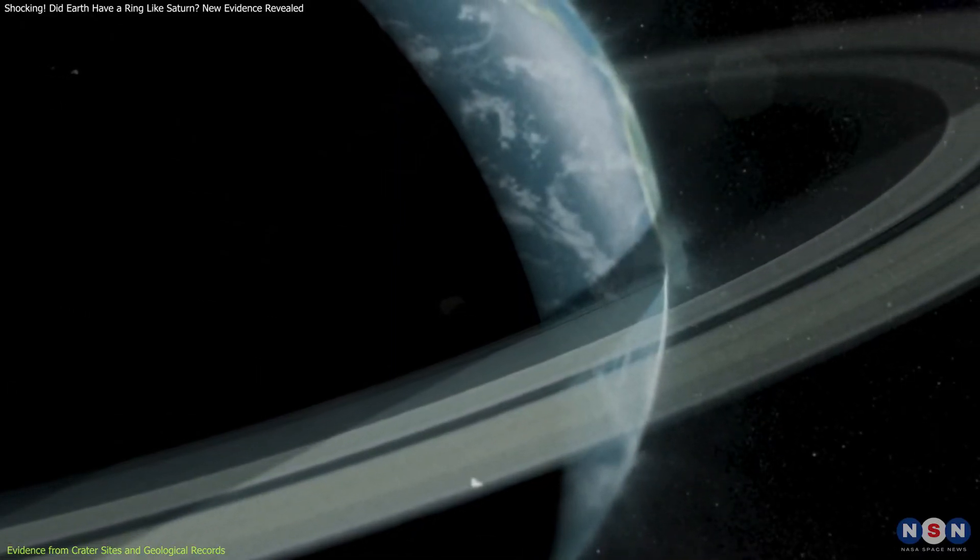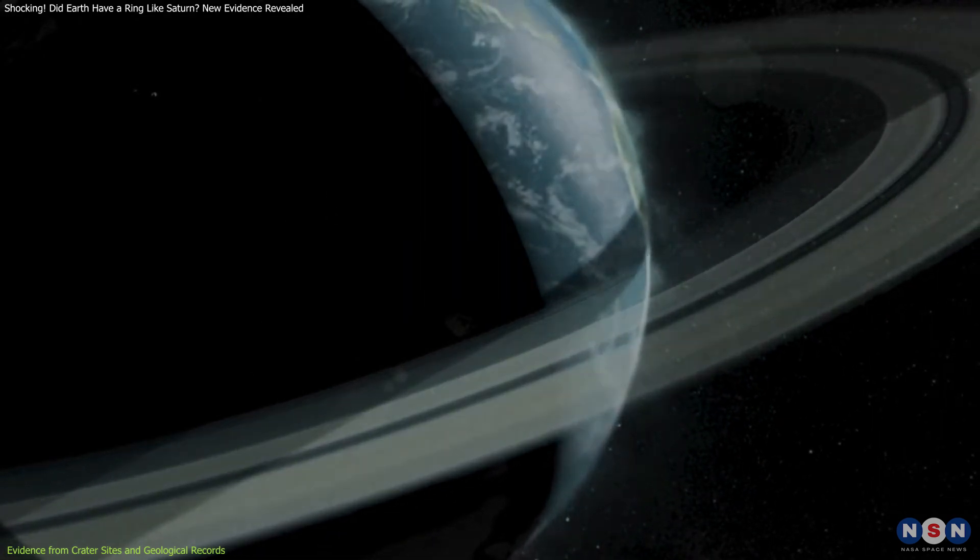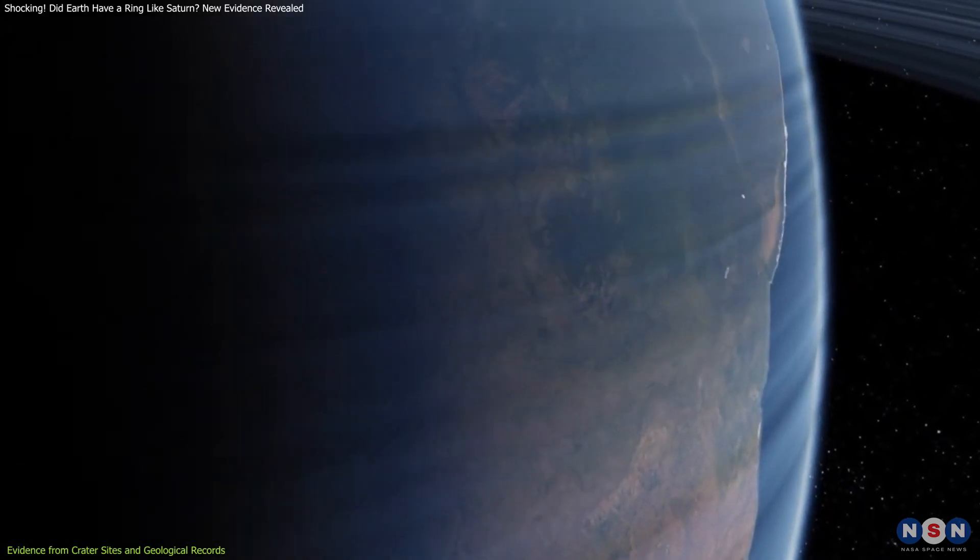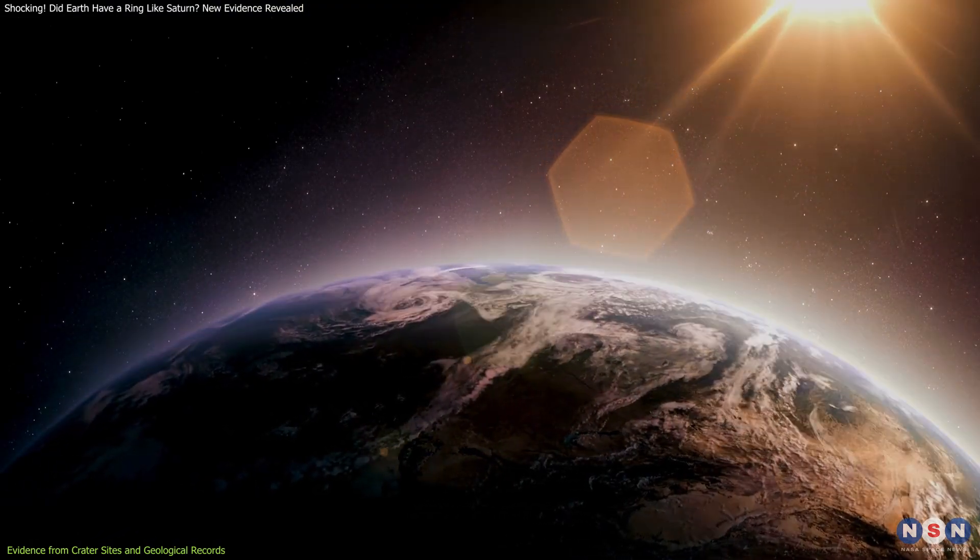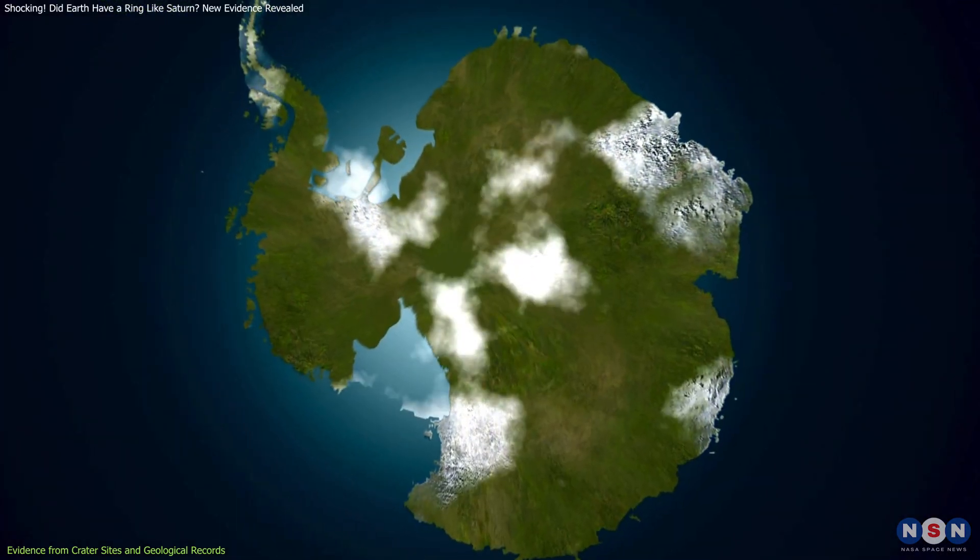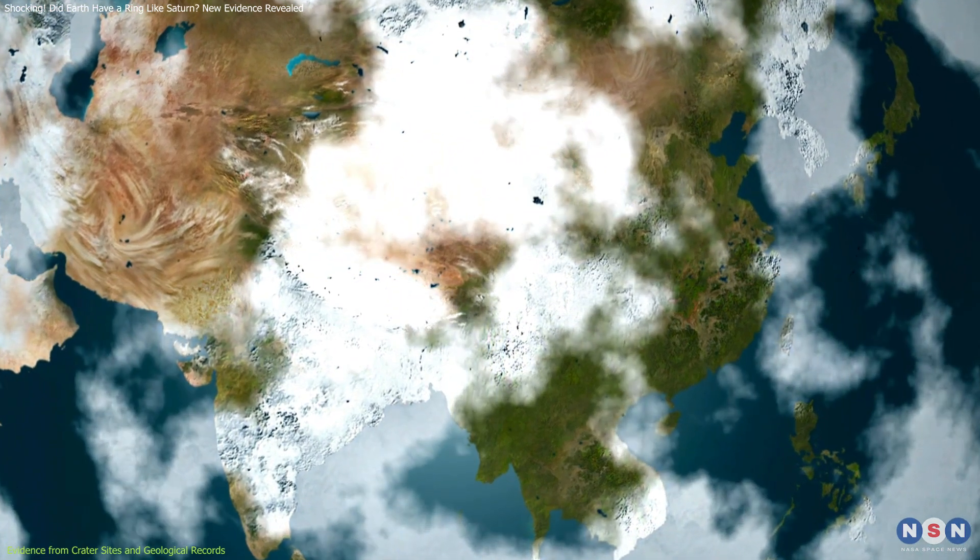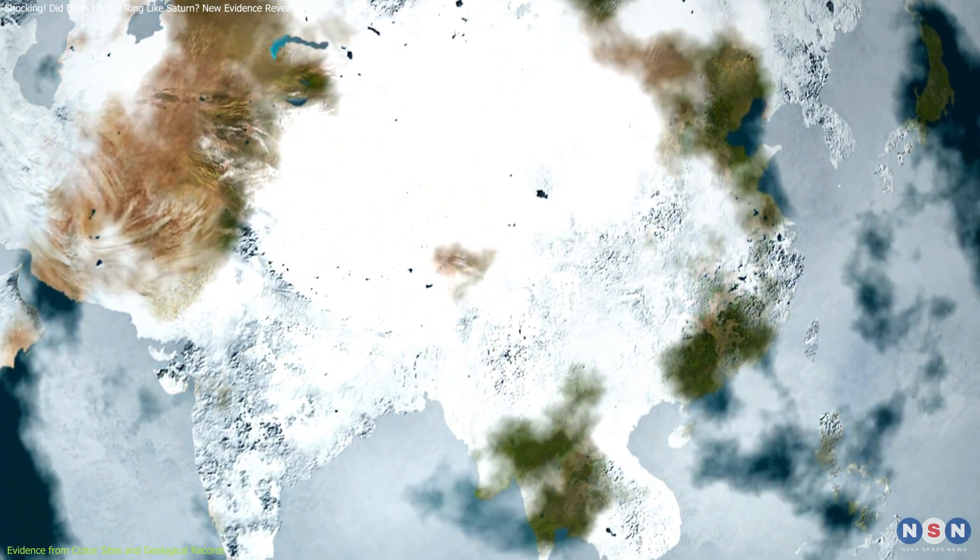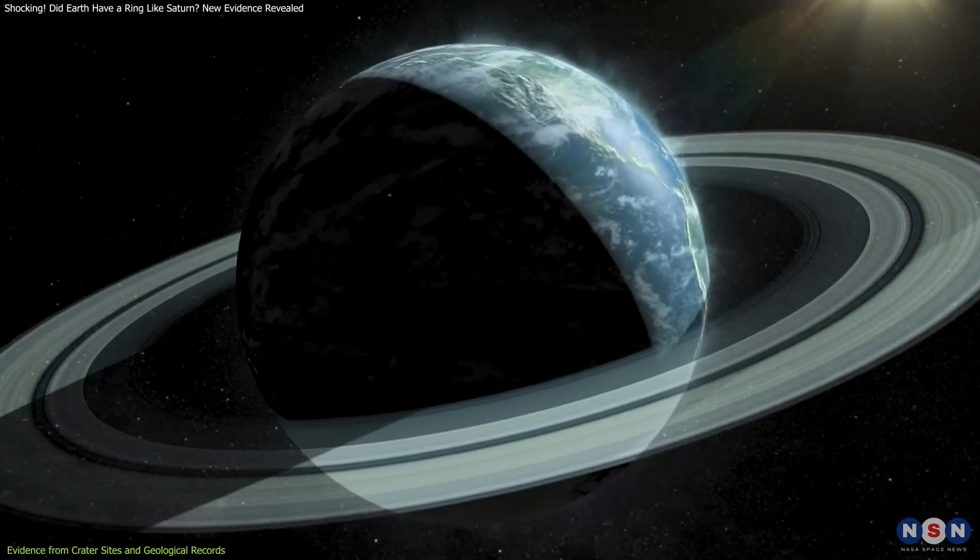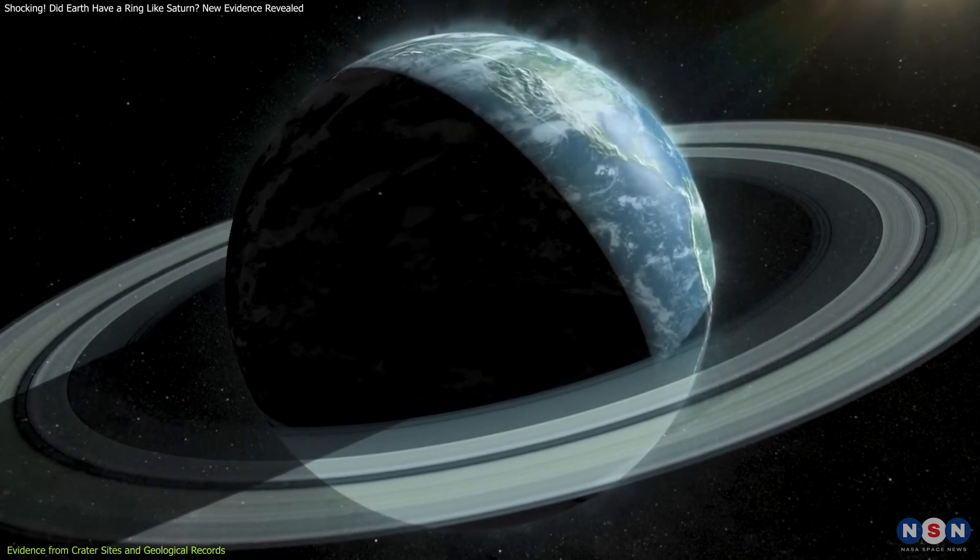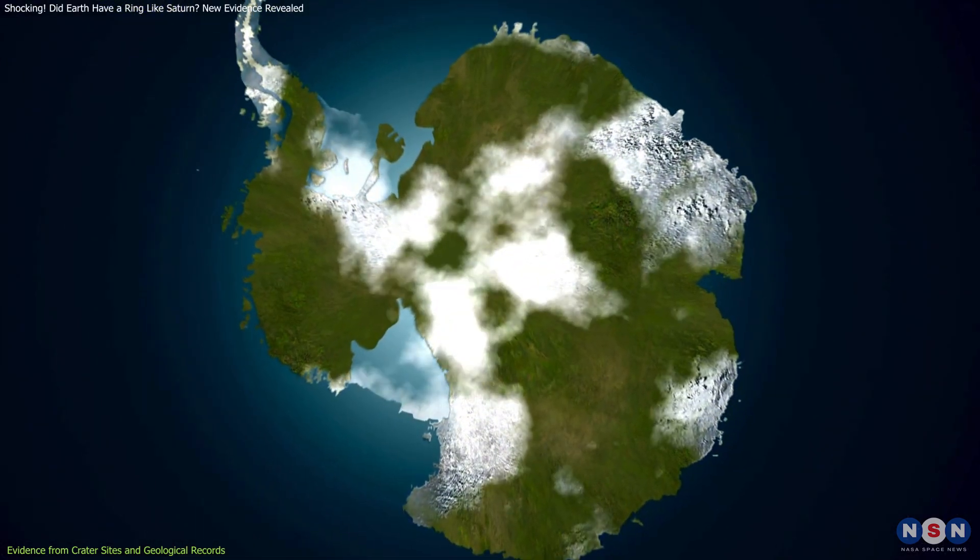Furthermore, the impact of such a ring could have had profound effects on Earth's climate. The researchers suggest that the ring could have cast a shadow over Earth, reducing the amount of sunlight reaching the surface and potentially leading to a period of global cooling. This idea aligns with the evidence of a significant glaciation event during the Ordovician period, known as the Late Ordovician Glaciation. While the exact mechanisms of how the ring might have influenced the climate are still uncertain, the correlation between the timing of these events is intriguing.